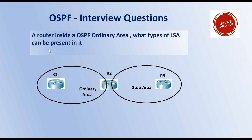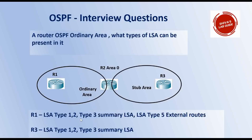Another scenario-based question: for a router inside an ordinary area (not a stub, totally stubby, or NSSA area), what types of LSA can be present? In a normal area, you can expect LSA type 1, type 2, type 3, and if there are redistributed routes, type 5 external LSAs. In contrast, a router in a stub area like R3 can only have type 1, type 2, and type 3 LSAs — it cannot have external LSAs. This tests whether the candidate knows what LSA types exist in each area type.